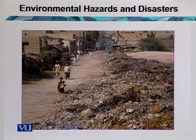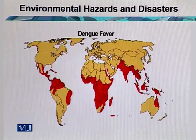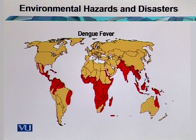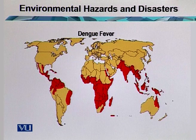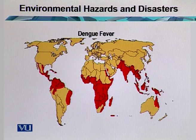Slums tend to have more disease compared to high-income areas. Dengue fever is prevalent in most of the developing regions of the world — particularly the tropical areas and regions closer to the equator. Those are the places where we have the maximum dengue fever.